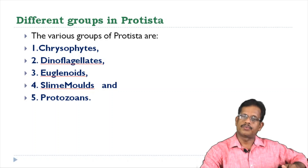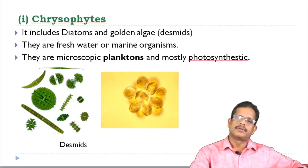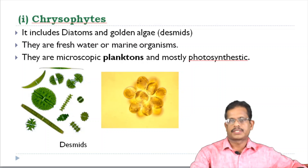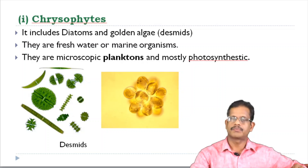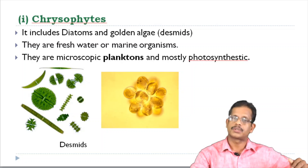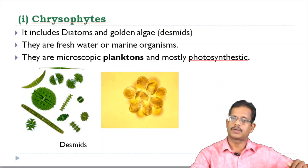The first group is Chrysophytes. This includes Diatoms and Desmids. Desmids are otherwise known as Golden Algae. This is called Golden Color.